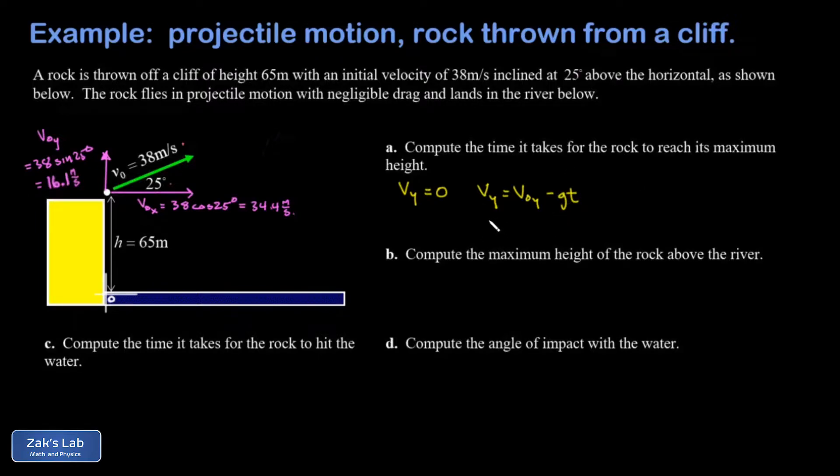I can plug in the y velocity at the moment of interest, that was zero. My initial y velocity was 16.1 meters per second. We'll use the approximation 9.8 for g, and t is our only unknown. We solve for t and this gives us about 1.64 seconds.